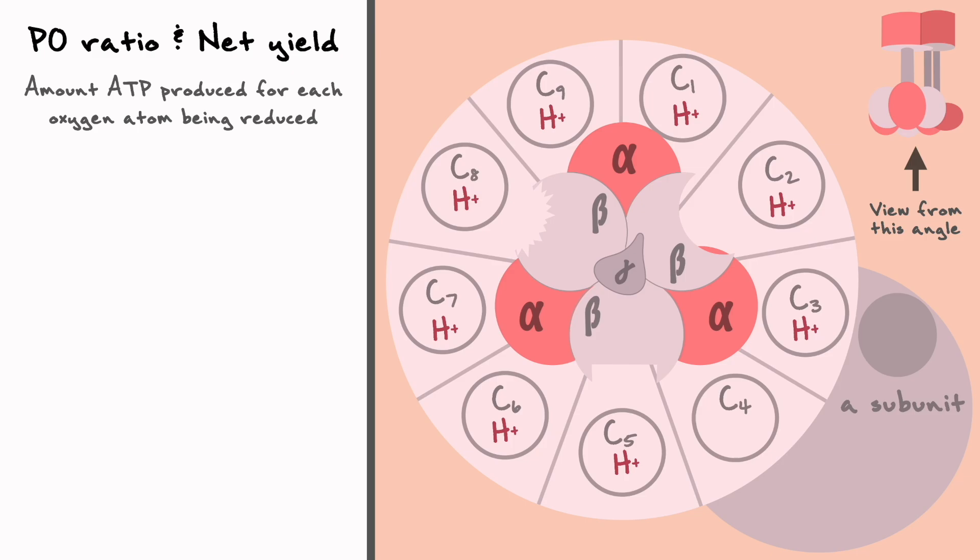While we discuss what a rotation of ATP synthase yields, I also want to discuss the concept of P/O ratio, which is defined as the amount of ATP that is produced for each oxygen atom being reduced. I know this definition might seem a little confusing at first, but hopefully by the end of this segment, it will be more intuitive when we get the ratios.